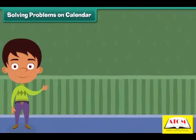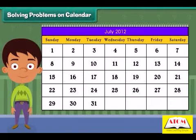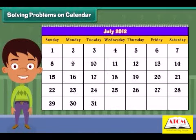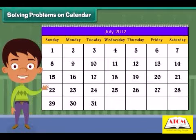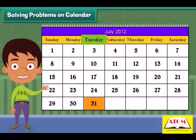Do you know that a calendar solves many problems? You can easily read the days and dates on a calendar. Let us look at the month of July for the year 2012. Can you tell on which day does this month end? Yes, it's Tuesday.